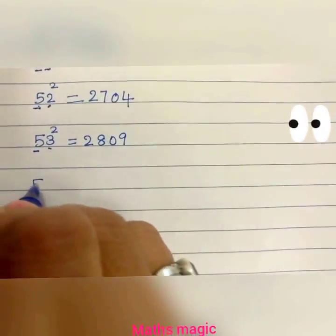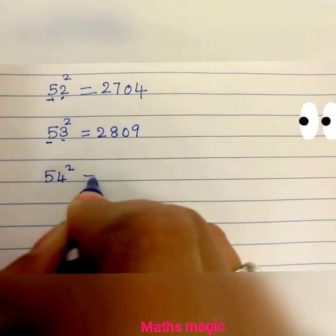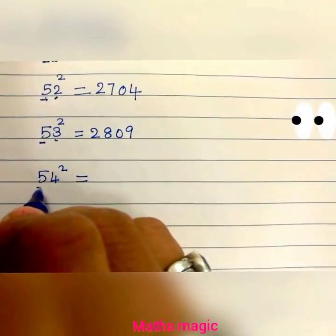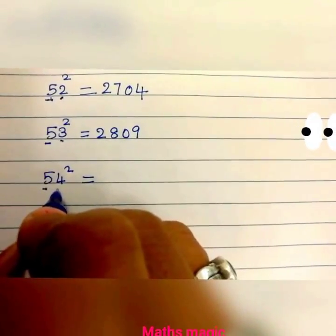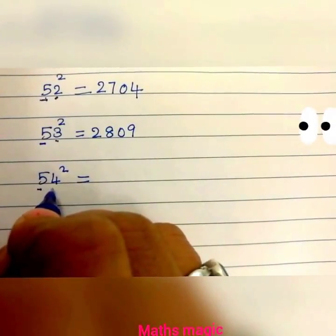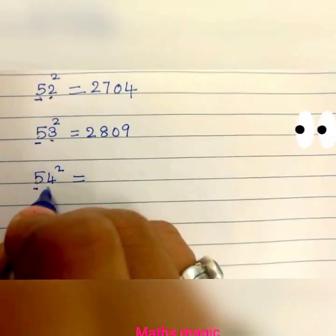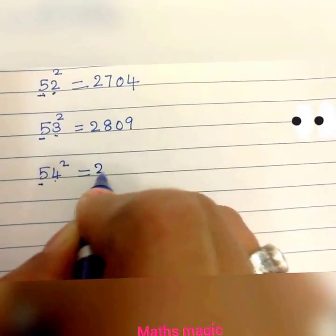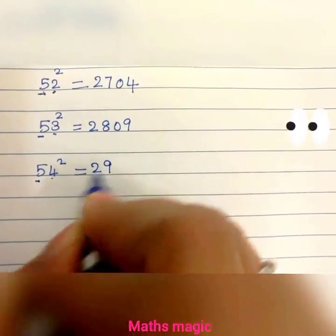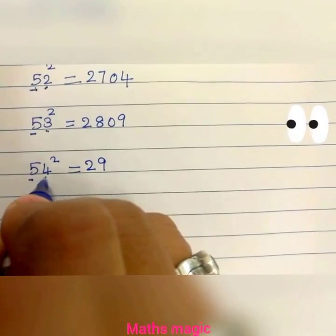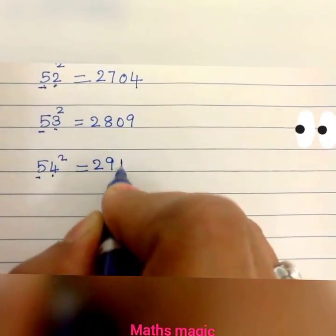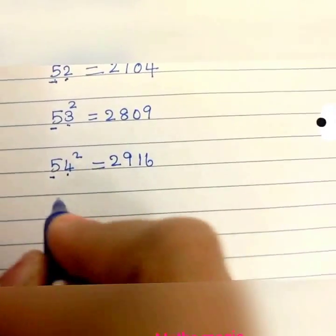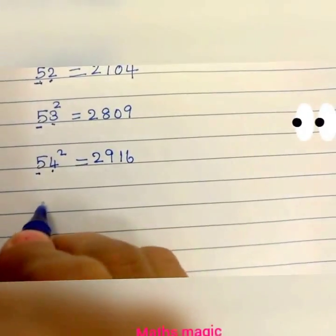54 squared: 5 squared is 25, plus 4 is 29. Now 4 squared is 16. So 54 squared is 2916.